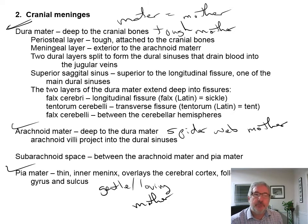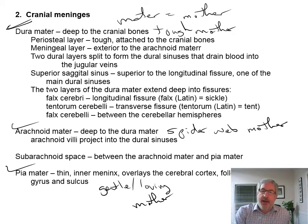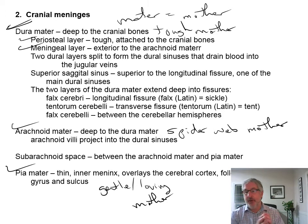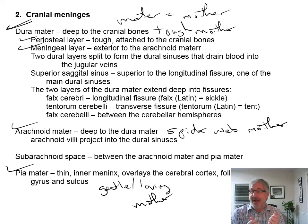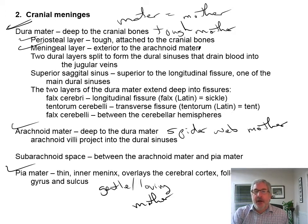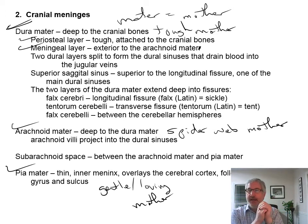The dura mater deep to the cranial bones has two layers: a periosteal layer and a meningeal layer. The periosteal layer is tough and attached to the cranial bones — if we were in a lab, we'd have sheep brains and you could feel how tough and hard the dura mater is; it's really hard to tear. The meningeal layer is exterior to the arachnoid mater. The two dural layers are split to form what are called the dural sinuses, which drain blood into the jugular veins.